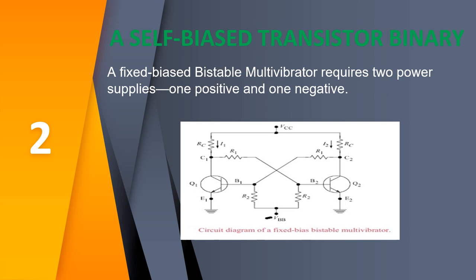Now let us see the second type. In collector-coupled bistable multivibrators, the collectors are coupled to the base of another transistor. In the fixed-bias configuration, biasing conditions are provided by one voltage source minus VBB and another voltage source VCC. Fixed voltage sources are required for biasing, which is why it is called fixed-biased bistable multivibrator. It requires one positive power supply and one negative power supply — two power supplies for both transistors.